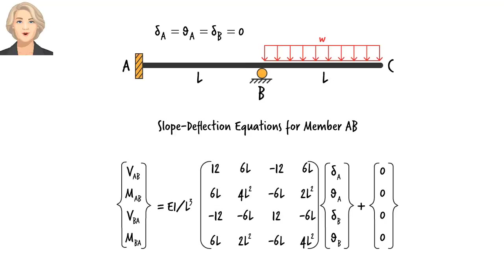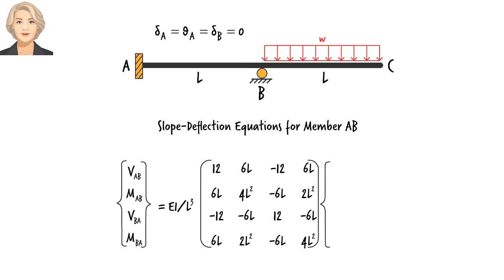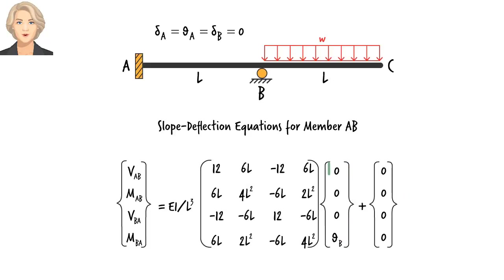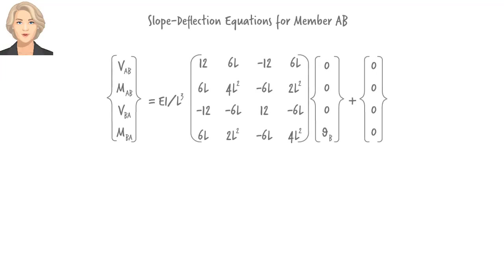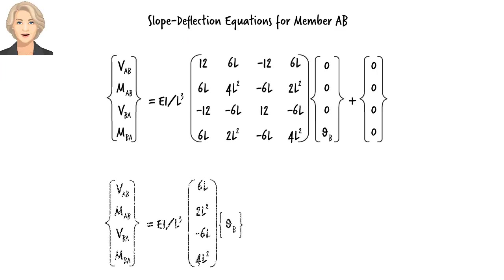So the system of equations can be written with zero substituted for delta_A, theta_A, and delta_B in the member end displacement vector. It is important to note that in this lecture we are ignoring axial deformation, which is why axial forces are not present in our equations — we will bring them into this formulation in future lectures. We can shorten the member end force vector by removing the three zeros and adjusting the stiffness matrix accordingly. Here are the equations for member AB in compact form.